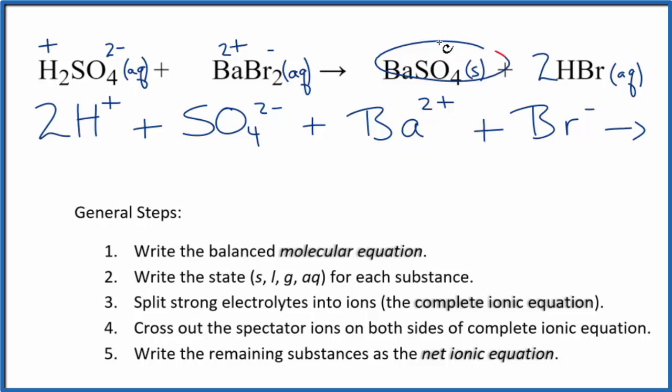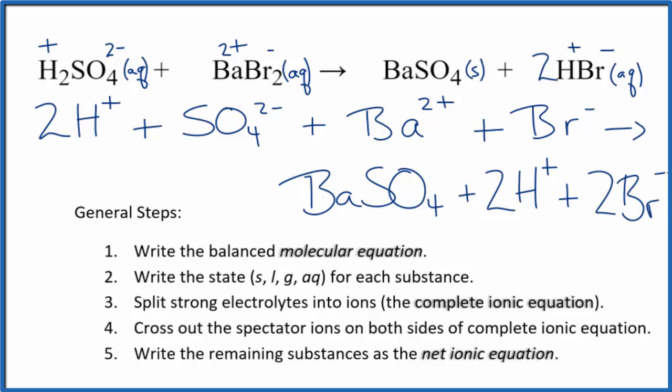For net ionic equations, when we have solids like barium sulfate, we don't split that apart. So we're going to keep barium sulfate together, BaSO4, and then two hydrogen ions and two bromide ions. Those are the products in our net ionic equation.